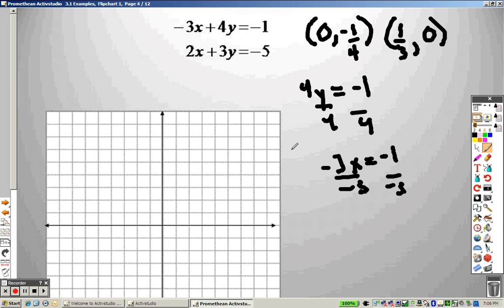Then I plug a 0 in for y. That's like saying I have negative 3x equals negative 1. So I divide both sides by negative 3, and I get 1 third. Why does that help me? Here's how it helps me. That means I plot the point right here at 0, negative 1 fourth, and I plot a point at 1 third, 0. And this is my line.